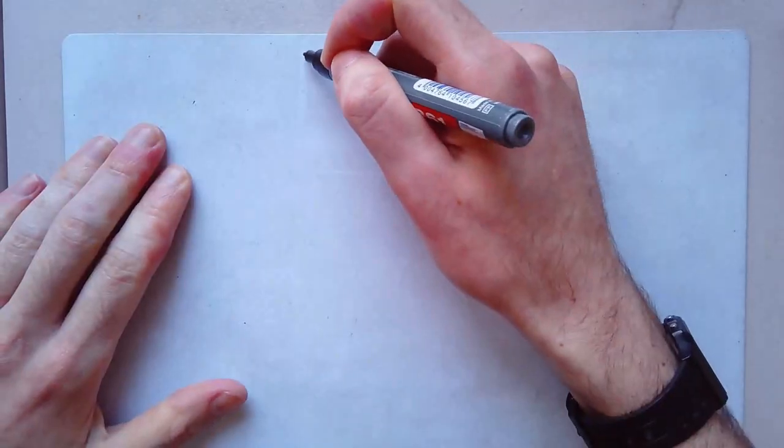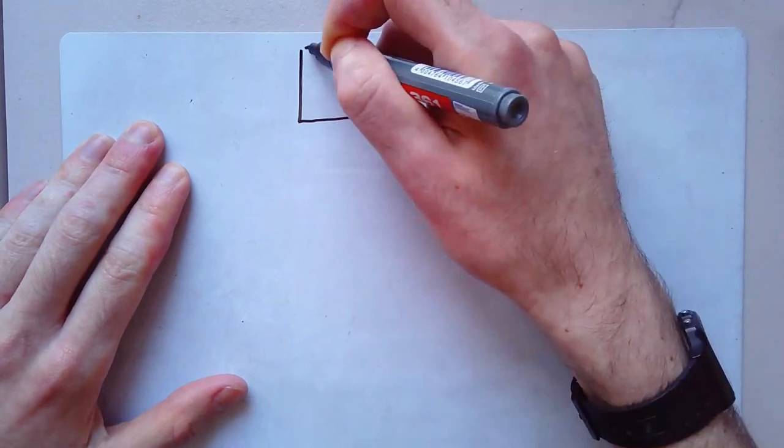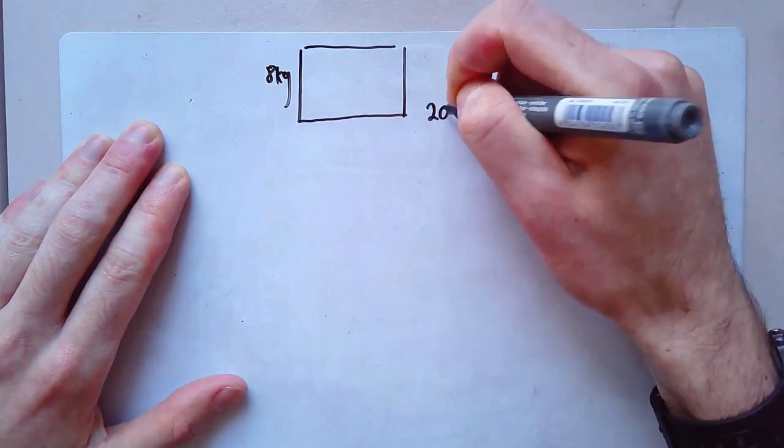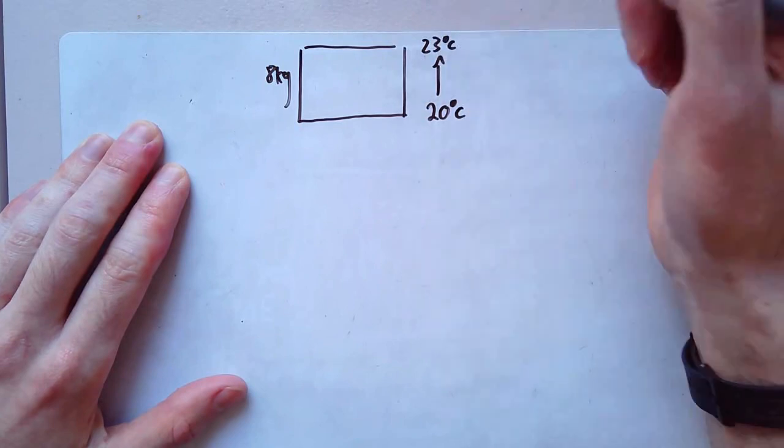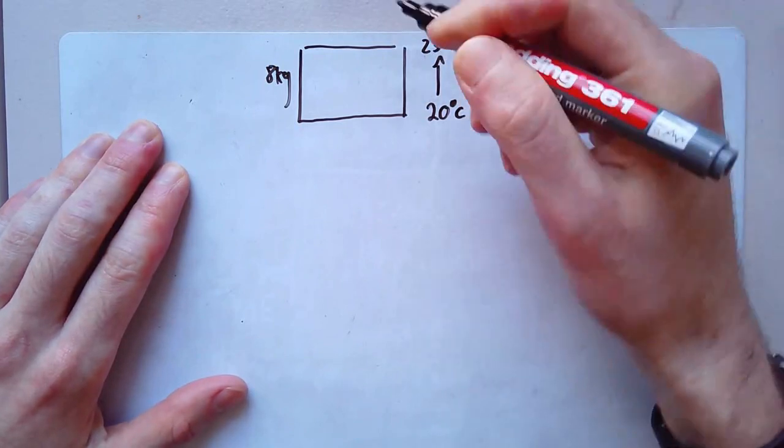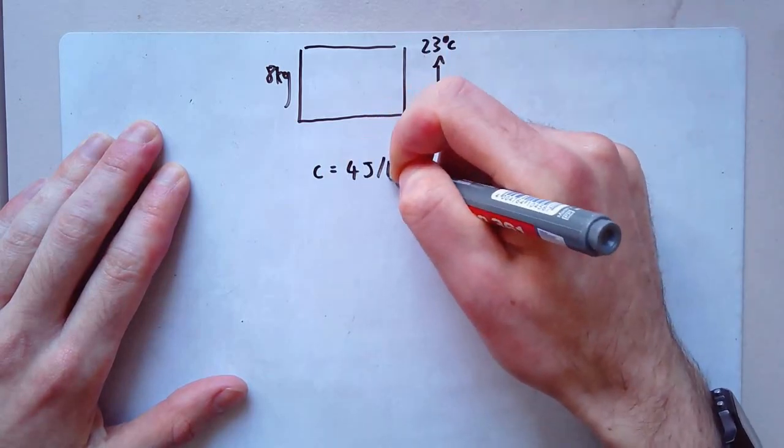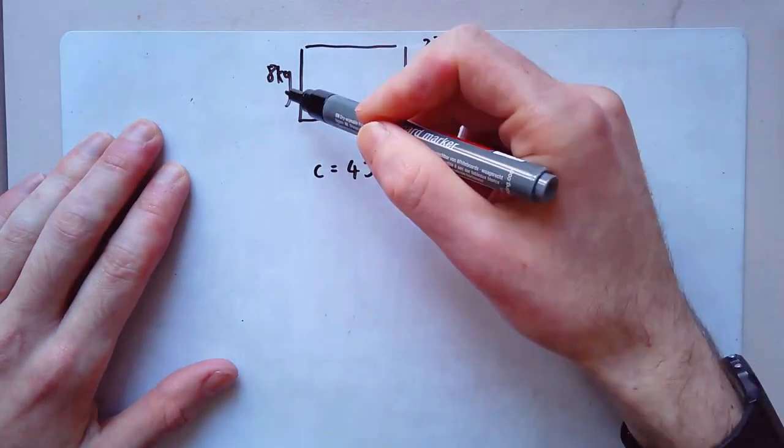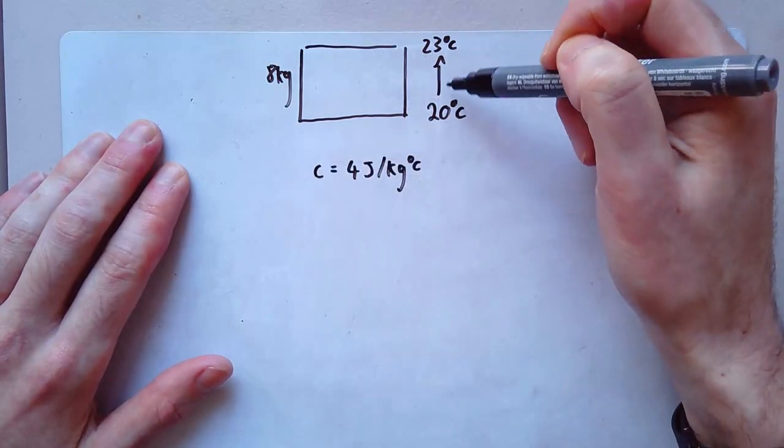Alright, so let's take another fairly straightforward example. Let's say I've got a box and my box has a mass of eight kilograms. It's sitting now at say 20 degrees. And I want to increase its temperature to 23 degrees. The specific heat capacity of this box, we'll say, is four joules per kilogram degree C.